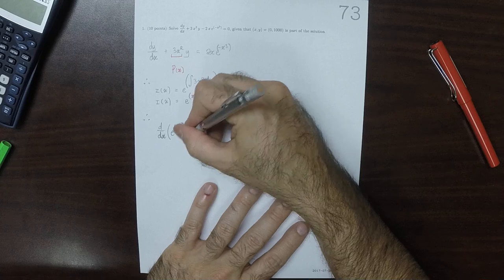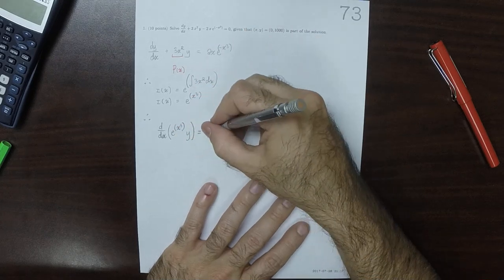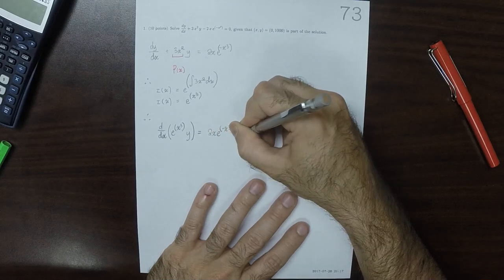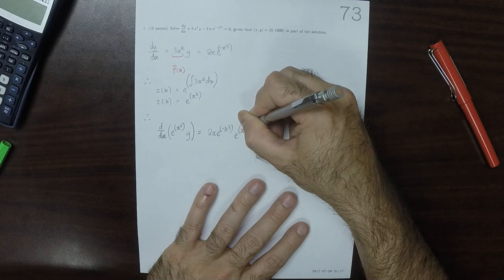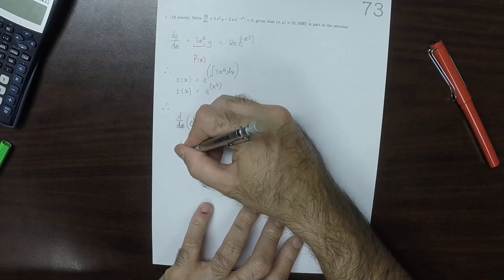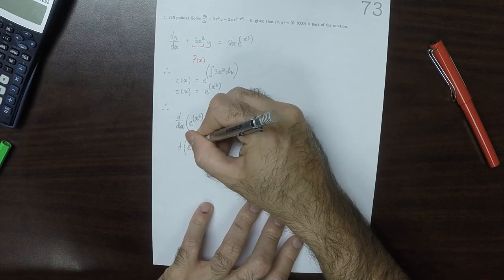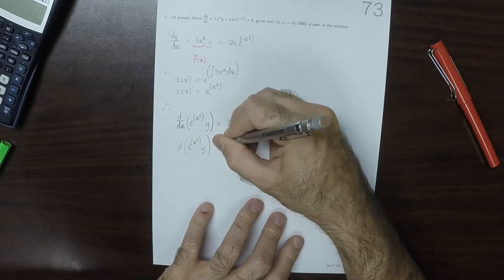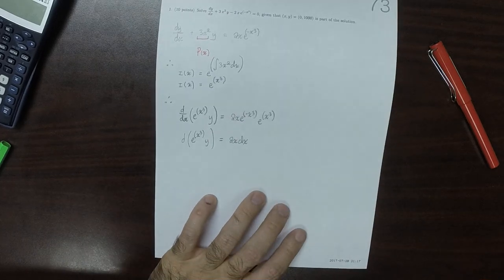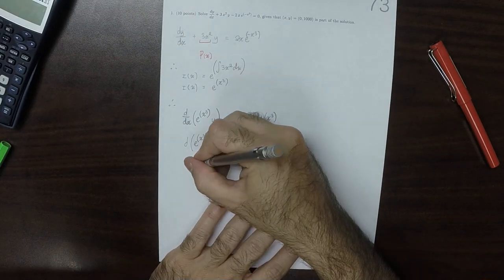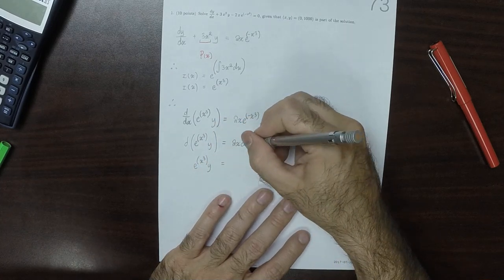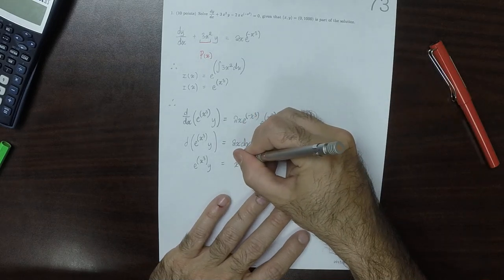Therefore, the derivative of the integrating factor times Y is Q times the integrating factor. It's neat and nice that those cancel, so that we get the differential exponential of x cubed Y is 2x dx. So exponential of x cubed Y is, anti-differentiating that, x squared plus a constant. Then we can solve for Y.